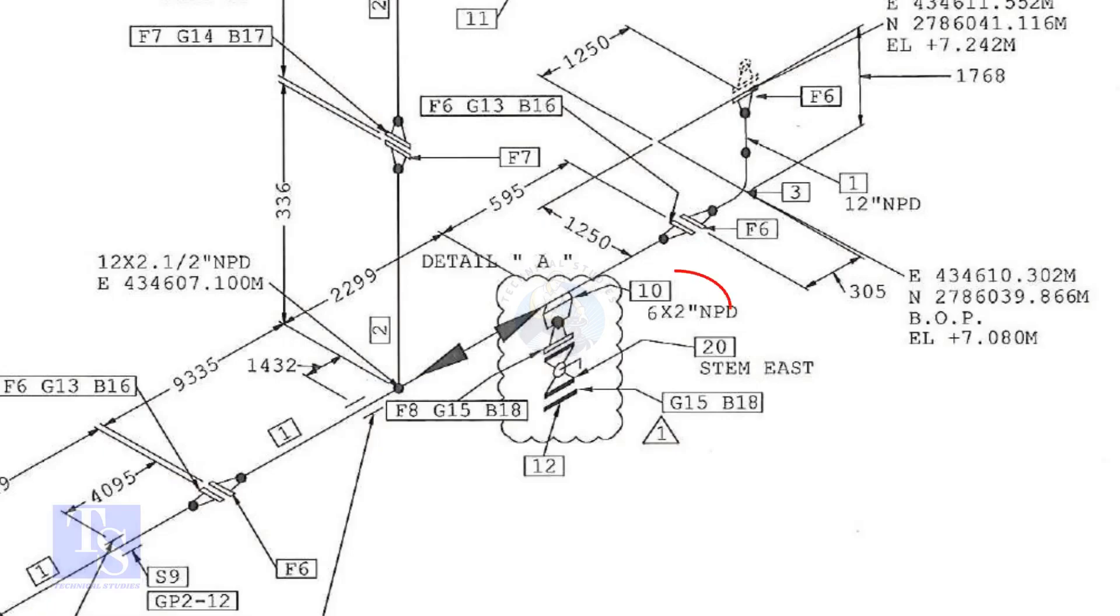In this drawing, the size of the weldolet is 6 inch into 2 inch. Let us check what is item number 10 in the description.